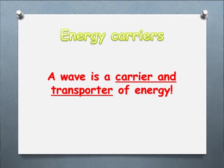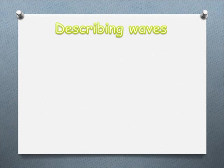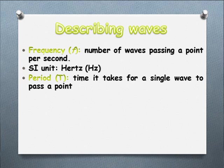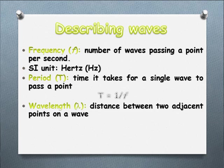Some other things we covered in Unit 2 are the features of waves. Frequency is how many waves pass a point per second — it tells us how quickly the waves are moving past. The SI units for frequency are Hertz. Period is how long it takes for a single wave to pass a point — effectively the inverse of frequency, so T equals 1 over F. Wavelength is the distance between two adjacent points, generally between two crests or two troughs, as they are the easiest points to identify on a wave. We measure wavelength in metres.